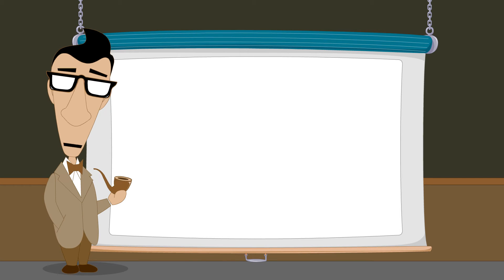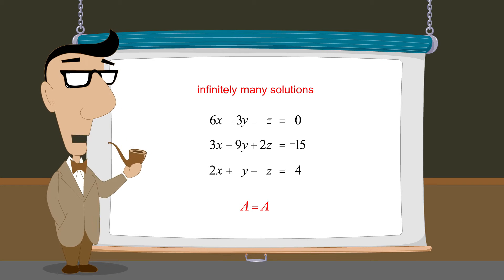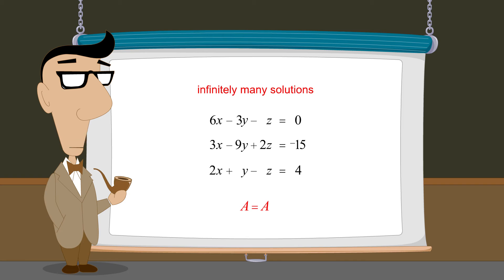We have also seen that if during the process of solving a consistent system of equations we obtain an equality between two equal numbers, then this indicates that the system has infinitely many solutions. However, we have not seen how to describe what these solutions are.